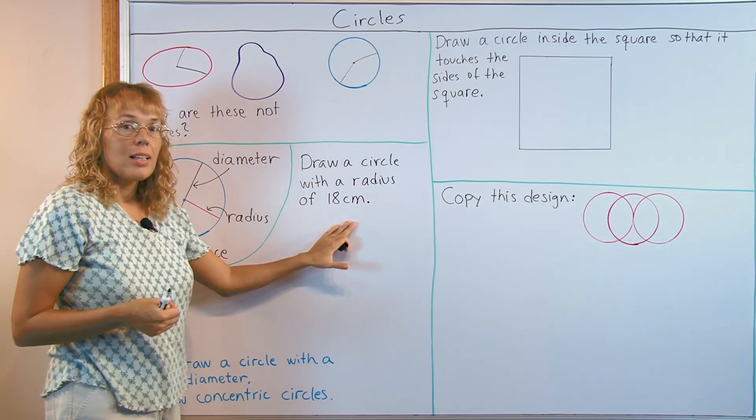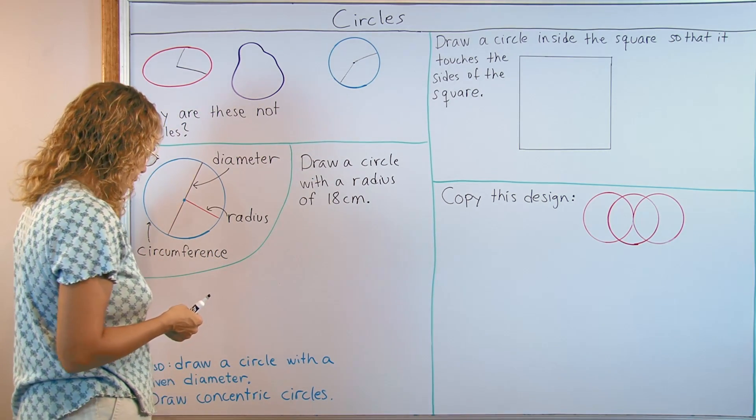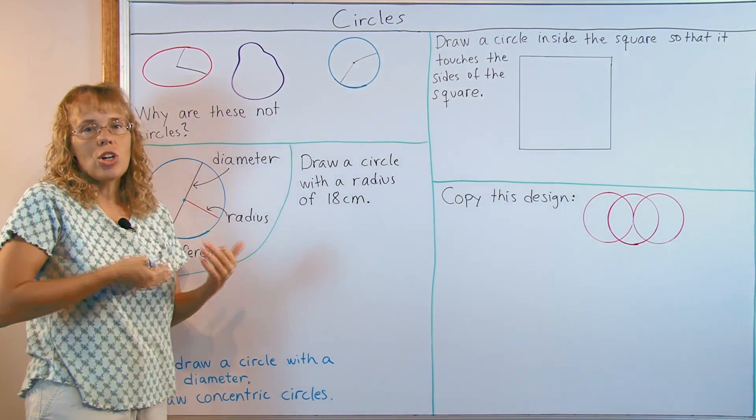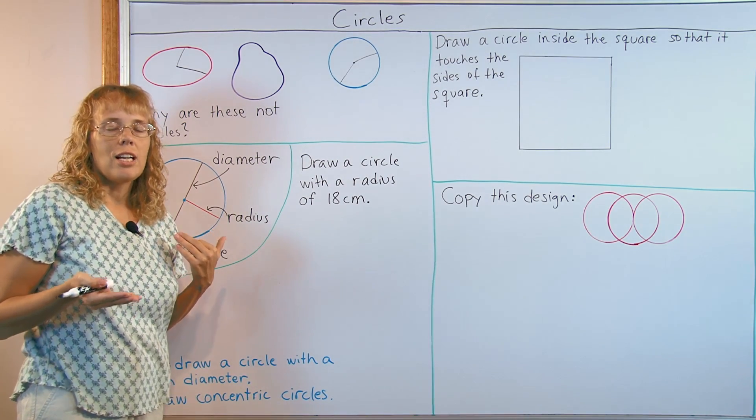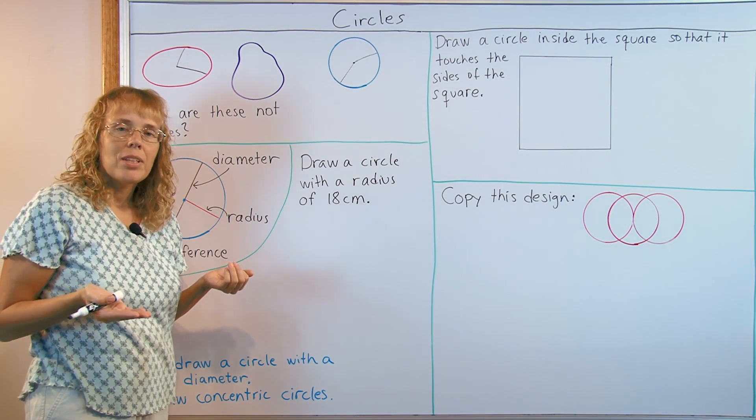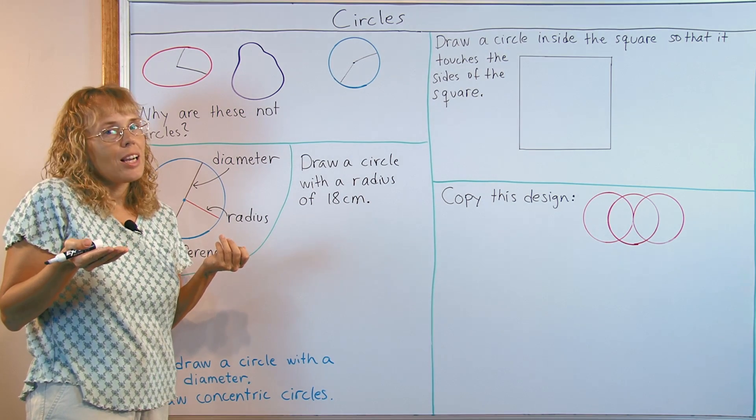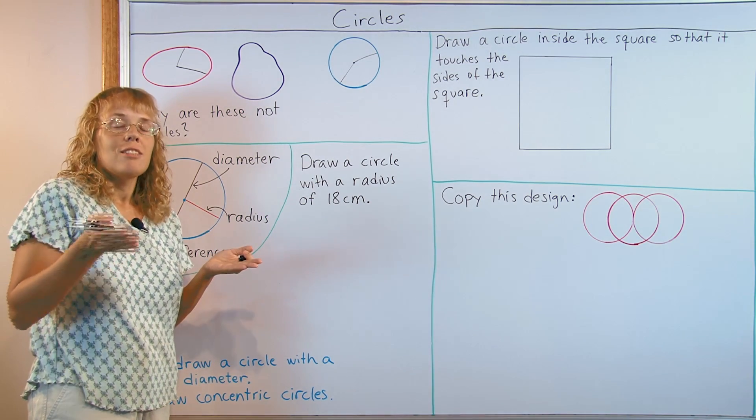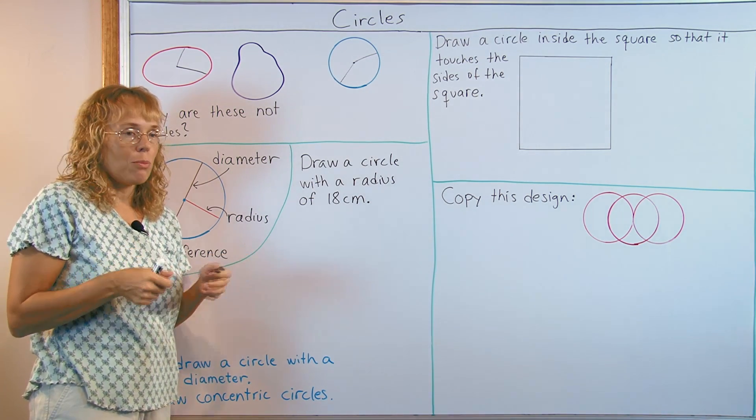Then they will also draw circles with a given diameter. For example, if I say draw a circle with a diameter of 30 centimeters, then one has to think that well actually you need the radius to be able to draw it with a compass.